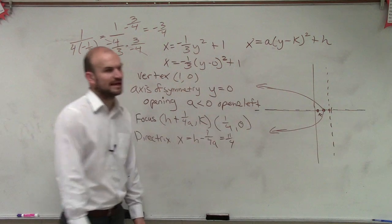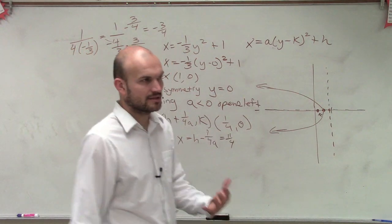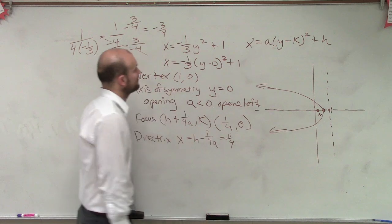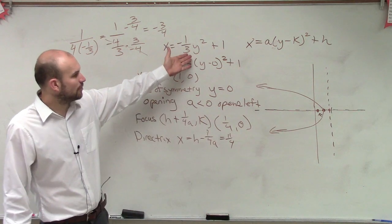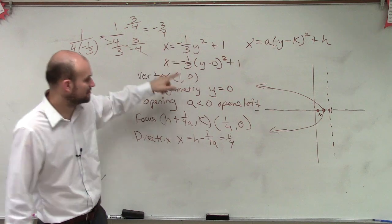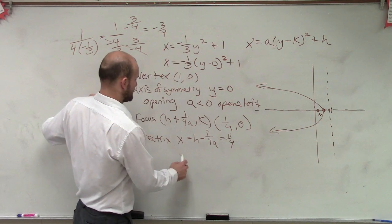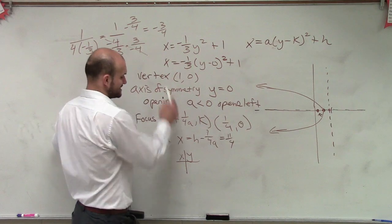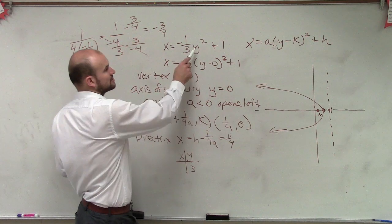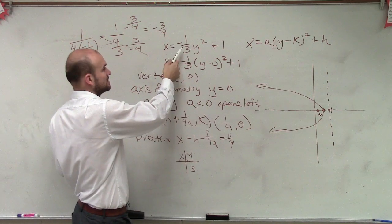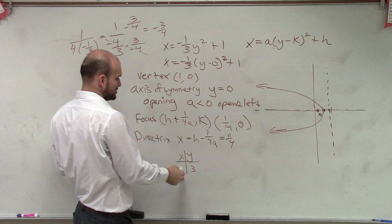If you want to be able to identify some other points, what we can simply do is create a table of values again and plug them in. So if I wanted to find a point maybe for y, let's find out the point of 3, because that seems pretty simple. So if I say, if I did an xy table, and I say I want to figure out what does x equal when y equals 3? So you plug 3 in. 3 squared is 9. 9 times negative 1 third is going to be negative 3. Plus 1 is 2.